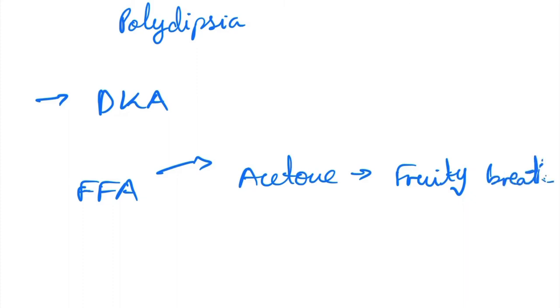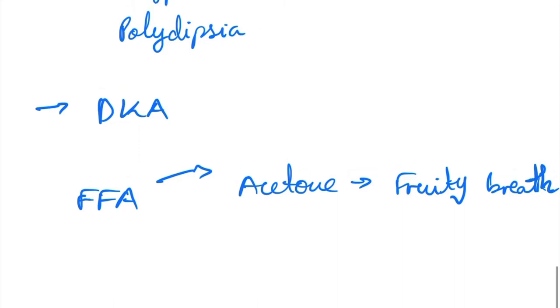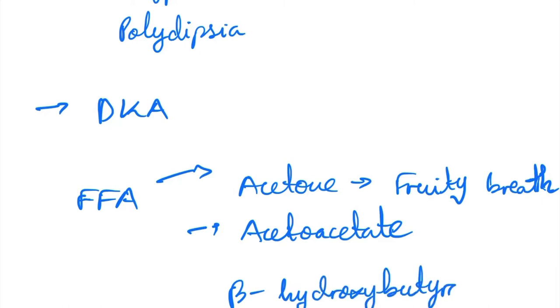There can also be acetoacetate, as well as beta-hydroxybutyrate. This diabetic ketoacidosis, as the name suggests, increases the acidity of blood.